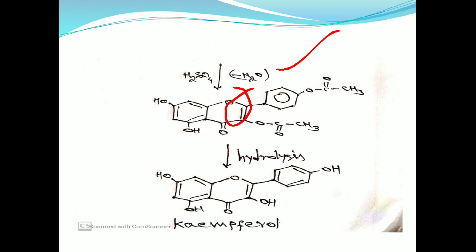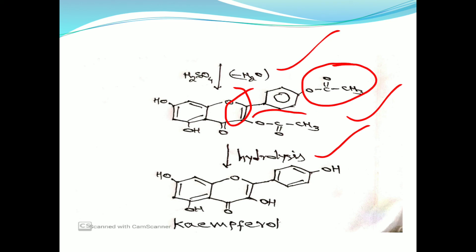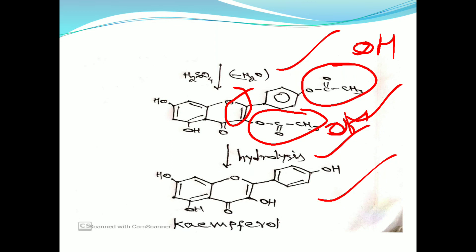This compound then undergoes a hydrolysis reaction. In this hydrolysis reaction, the CH₃COO groups are converted into OH groups. Finally, camphorole is formed.